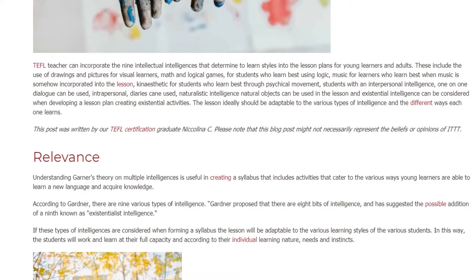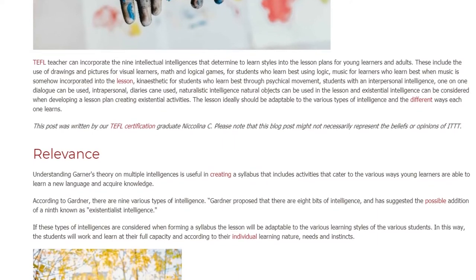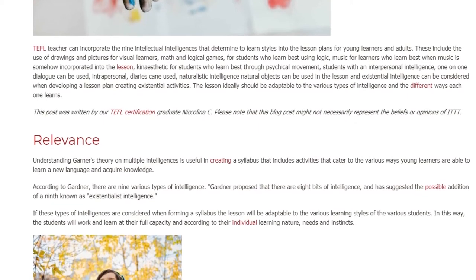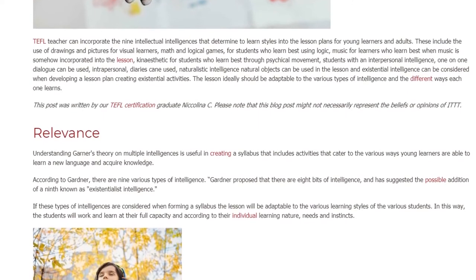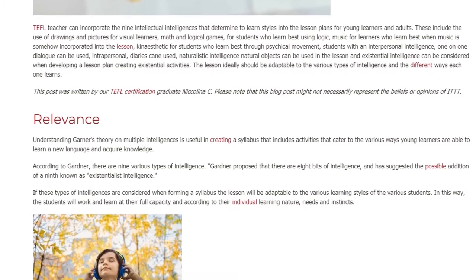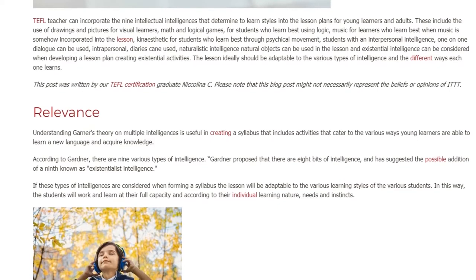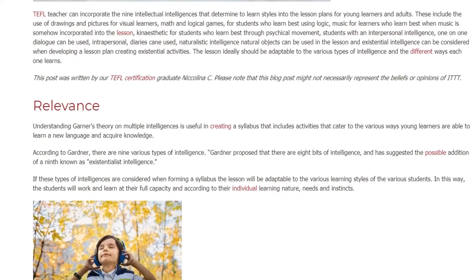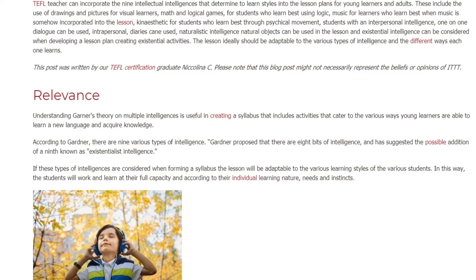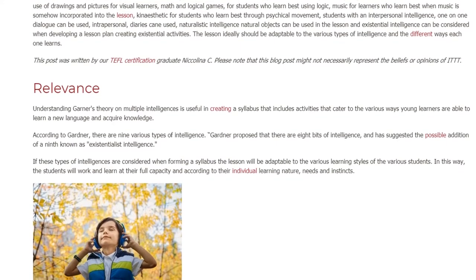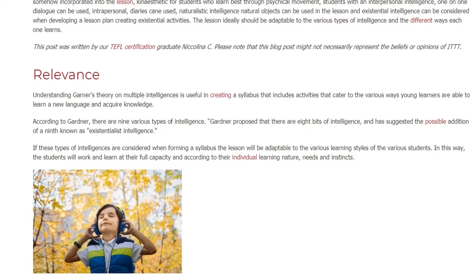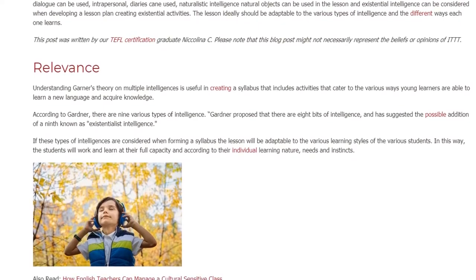Relevance: Understanding Gardner's theory on multiple intelligences is useful in creating a syllabus that includes activities catering to the various ways young learners are able to learn a new language and acquire knowledge. According to Gardner, there are nine various types of intelligence. Gardner proposed eight core intelligences and has suggested the possible addition of a ninth, known as existentialist intelligence.